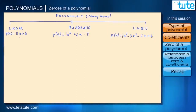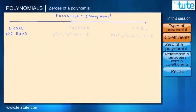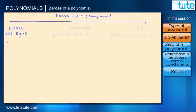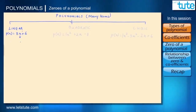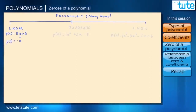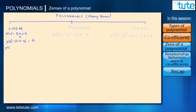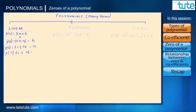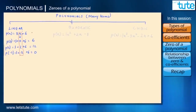Now let's look at this linear polynomial. Everything here seems pretty sorted except for the value of X — we don't know what it is. So I'm going to substitute some random numbers in place of X to see how this polynomial is affected. If X equals 0, then p(0) = 3×0 + 6 = 6. If X equals 2, p(2) = 12. If X equals minus 2, we get 0.